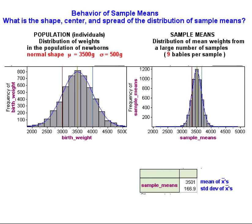Let's see what happened. Did you predict correctly? It looks to me like the sample means are also normally distributed. I can see that they are centered at 3,500 grams. When I calculated the mean of all the sample means that I've collected, I got something that was very close to 3,500.